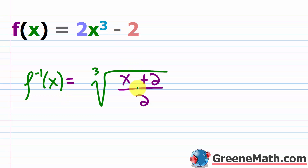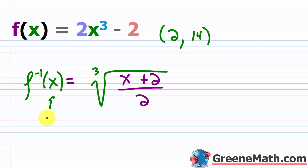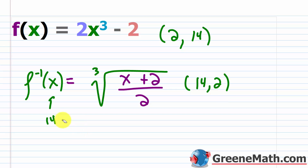These guys are inverses. You can pick a number, plug it in, and run it through. For example, if I do x = 2: 2 cubed is 8, 8 times 2 is 16, 16 minus 2 is 14. So the ordered pair is (2, 14). If I take 14 and plug it into the inverse, I should get 2 back: 14 + 2 is 16, 16 divided by 2 is 8, the cube root of 8 is 2. So we get (14, 2) as an ordered pair — these guys are just reversing each other, the x and y values are just swapped.